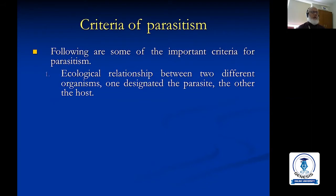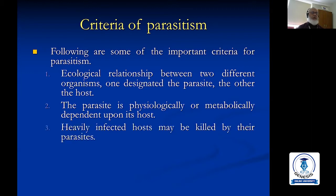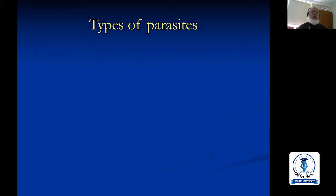The criteria of parasitism: First, it is an ecological relationship between two different organisms — one designated as the parasite and the other as the host. The parasite is physiologically or metabolically dependent upon the host. A heavily infected host may be killed by its parasites, though this is usually unusual. The reproductive potential of the parasite exceeds that of the host.